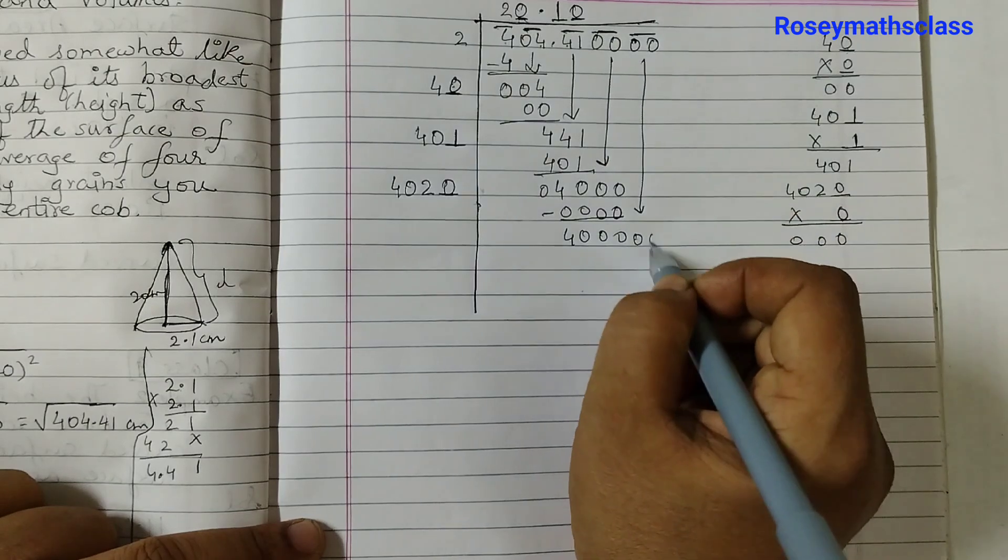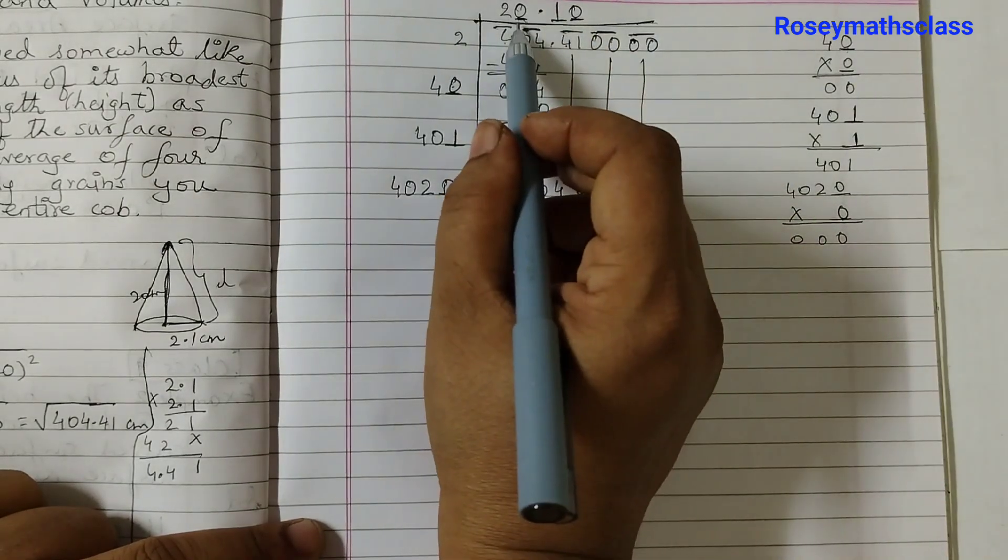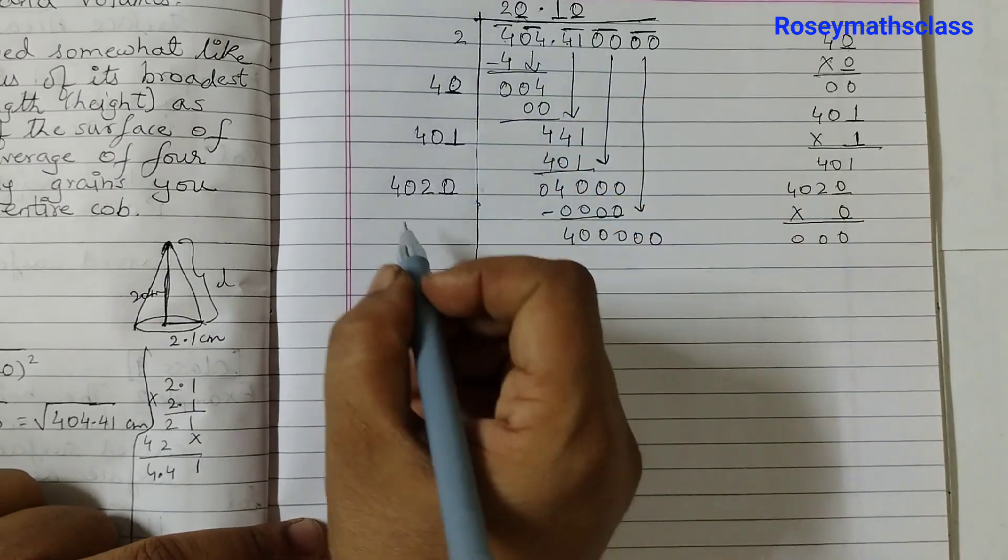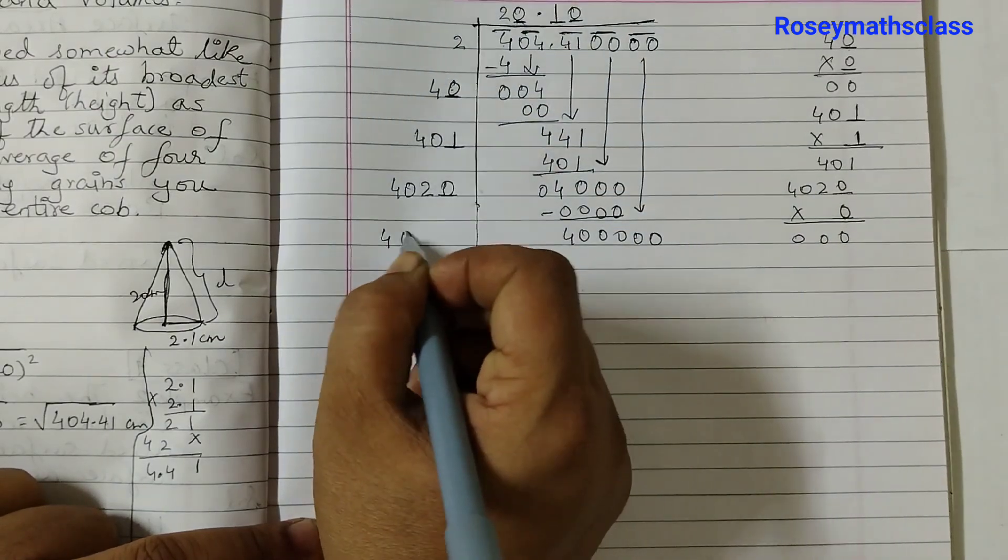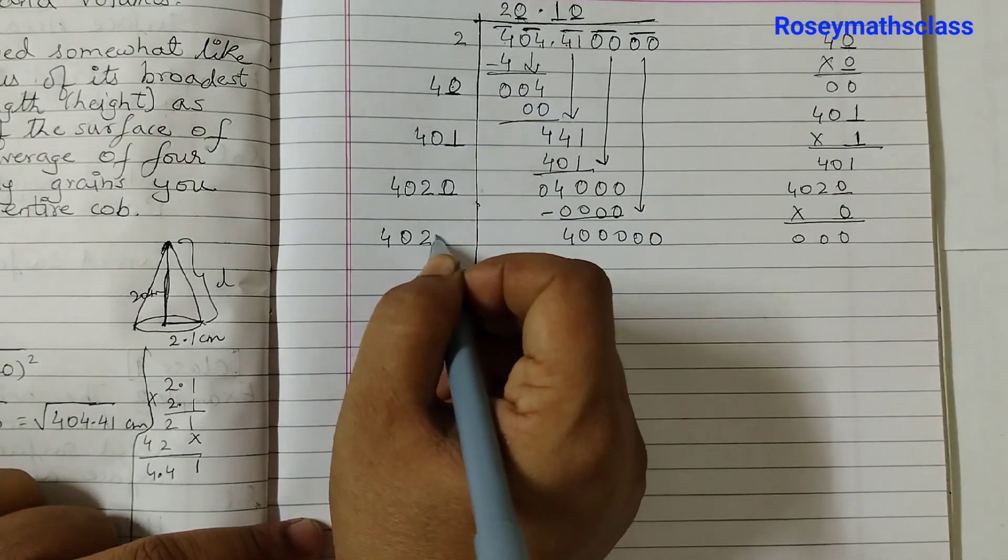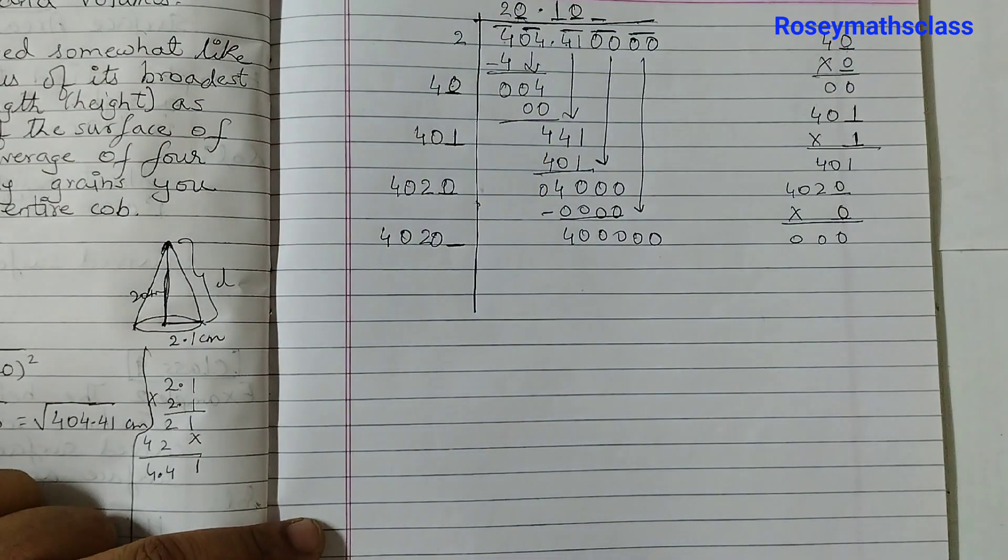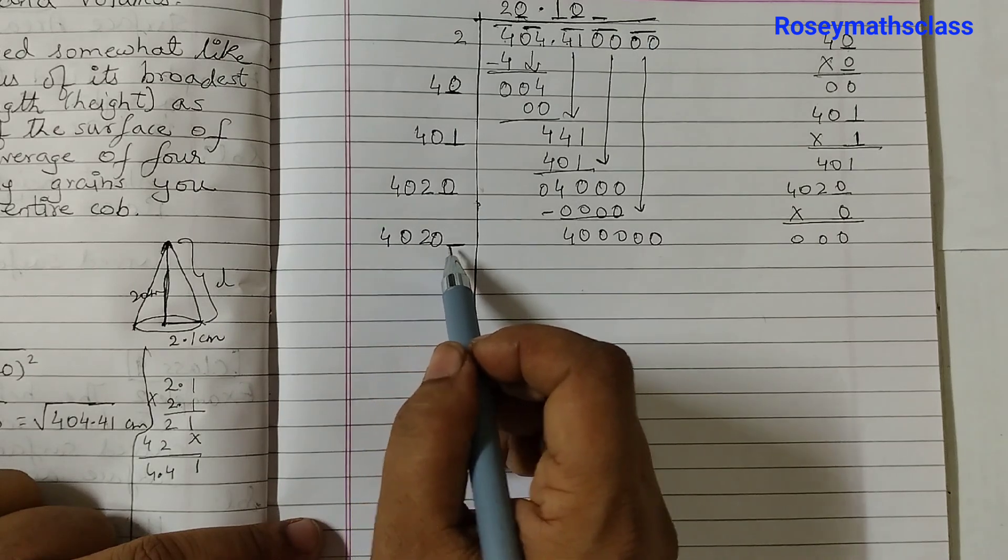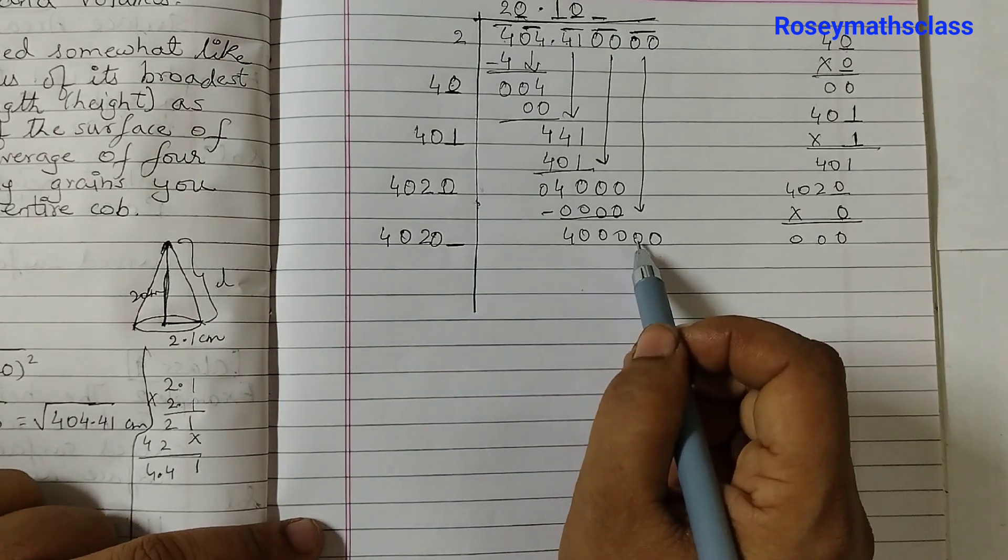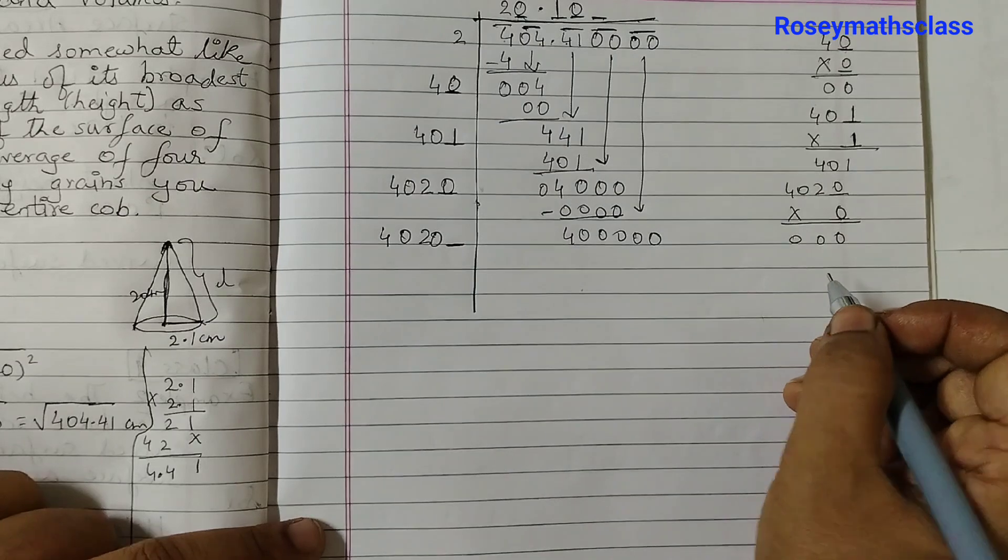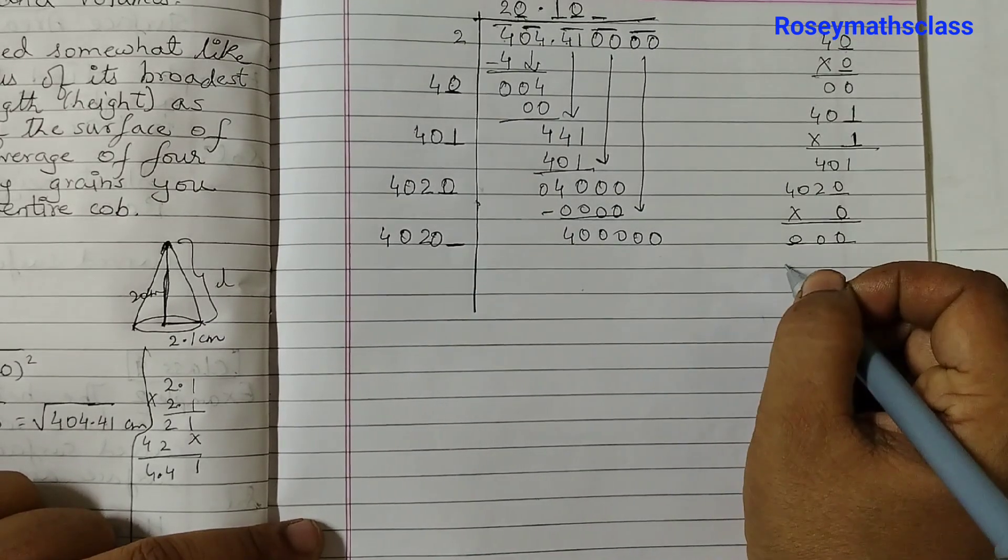We will continue with one more digit in the quotient. So now again we can put a pair of zeros, bring that down. Double this, this is 2010. So double of this will be 4020. Now we want a digit here and the same digit goes here. Here we have 5 digits and here 6. So we can try 9.